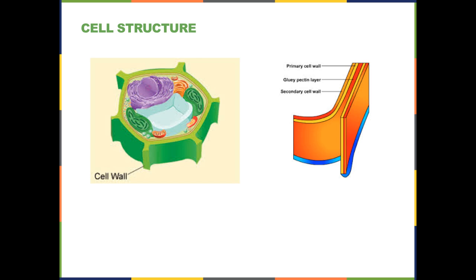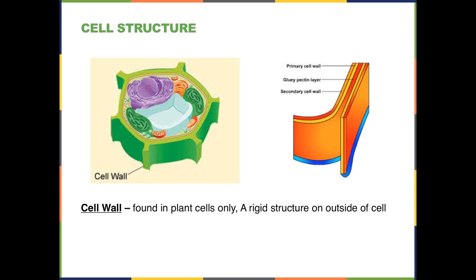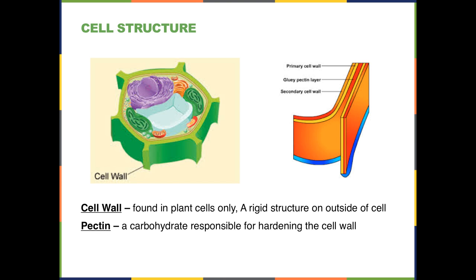As we move from function to structure, we begin by talking about a structure found only in plant cells — the cell wall. The cell wall is a rigid structure on the outside of the cell membrane that protects the cell from various insults and many times serves to maintain the cell's integrity and posture. The cell wall is composed of many things.